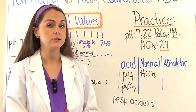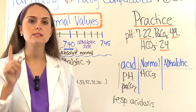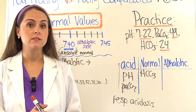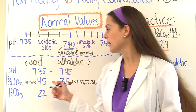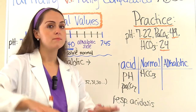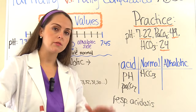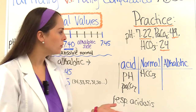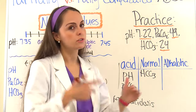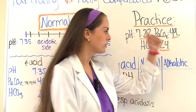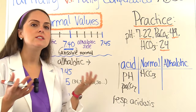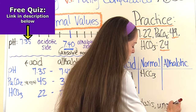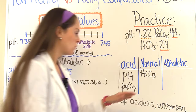We have acidosis and PaCO2 represents respiratory, so we have respiratory acidosis. Do we have compensation? No — blood pH is still abnormal, and the bicarb isn't trying to increase itself into an abnormal range to combat the acidosis. So this is respiratory acidosis, uncompensated.